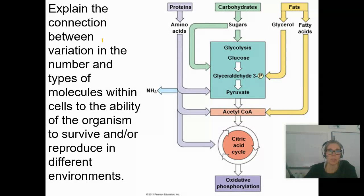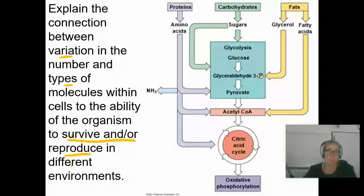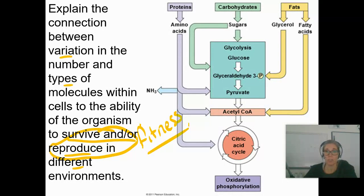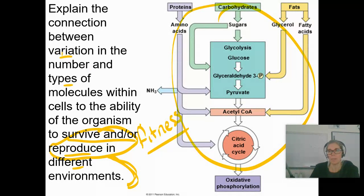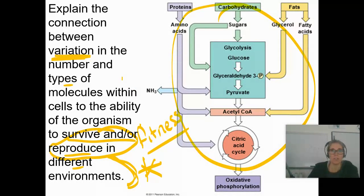Another thing that AP wants you to be able to do is explain the connection between variation in the numbers and types of molecules within cells and the ability of an organism to survive and reproduce in different environments. Survive and reproduce is this idea of fitness. In some environments, if there's oxygen around, you can do all of these processes and live another day. In an anaerobic environment, some bacteria — which have variation compared to us — can live just fine there.